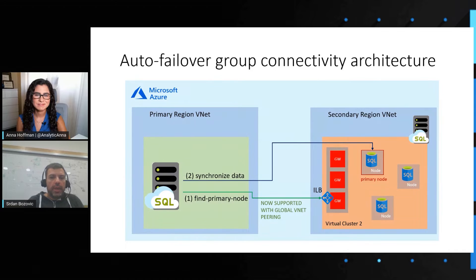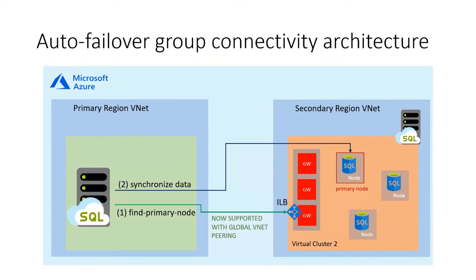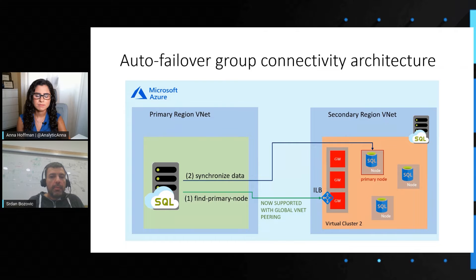Does this mean that whenever a new virtual cluster is created, it's automatically going to have Global VNet Peering support? And when we deploy new managed instances, are they also going to get a new cluster with this support? Yes, it's a virtual cluster thing. As you can see on this diagram, there is one virtual cluster per subnet, and this virtual cluster holds all managed instances placed in that subnet. Once a new virtual cluster is built, it gets this new load balancer. But if you place a new managed instance in an existing virtual cluster, then that managed instance will not have Global VNet Peering enabled.